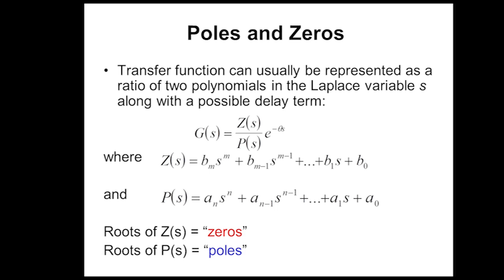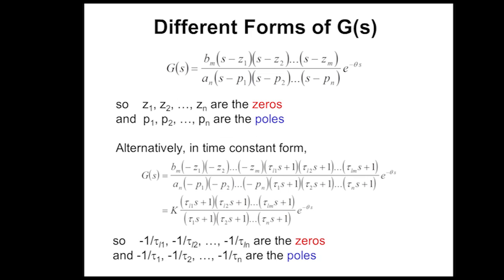Transfer functions can generally be represented — these higher-order transfer functions — as a polynomial in the numerator and a polynomial in the denominator. The roots of the polynomial in the numerator are called zeros, and the roots of the polynomial in the denominator are called poles. There are going to be some interesting characteristics of each of those that I'll discuss in the next couple of slides.